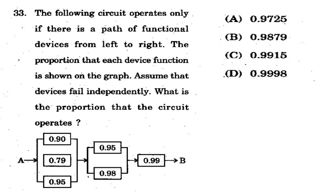Question 33: A circuit operates only if there is a path of functional devices from left to right. The proportion that each device functions is shown on the graph. Assuming devices fail independently, what is the proportion that the circuit operates? The options are shown on screen, and the correct answer is option B - 0.9879.